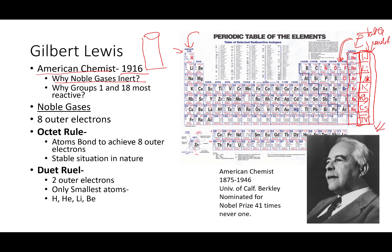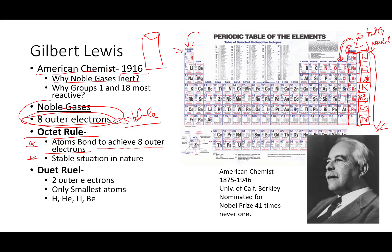Here's what Gilbert Lewis figured out: the noble gases all have eight outer electrons, and he determined that that eight outer electron configuration is what makes atoms stable. He came up with something we refer to as the octet rule. The octet rule says that atoms bond to achieve eight outer electrons, and that eight outer electron situation is stable in nature. Please understand — this rule is not something that mankind made. This is the way nature is constructed, and we uncovered it.